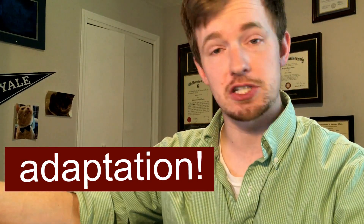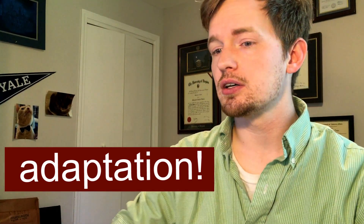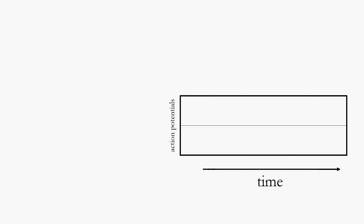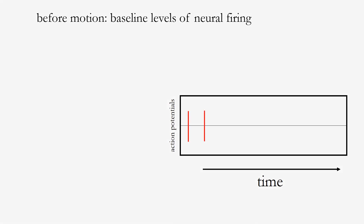This leads us into something called adaptation in the visual system. Adaptation is basically when a neural response gets used to a certain steady amount of information. Before we experience any motion in our visual field, neurons responsible for detecting movement changes are going to be firing at a baseline level — a regular, steady control level of activation.